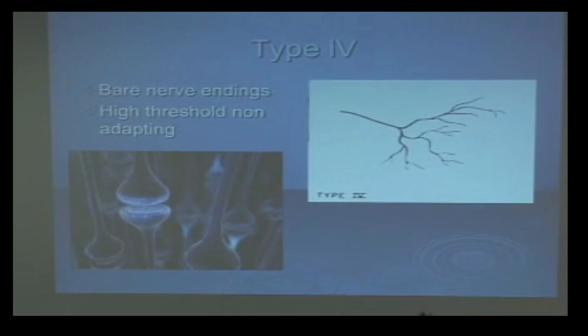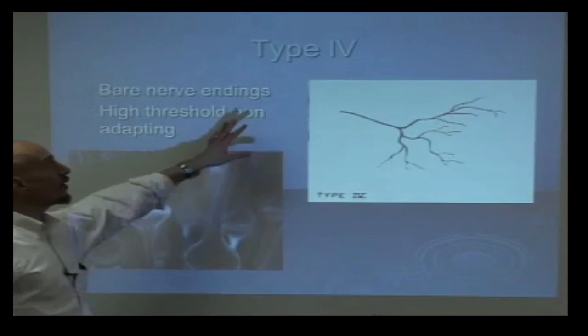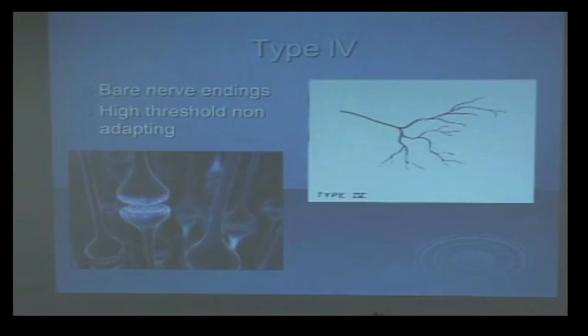Type 4 mechanoreceptors are the ones that we're trying to not activate. These are the bare naked nerve endings and they're high threshold non-adapting pain fibers. These are C fibers. This is what causes pain. The patient comes in with stagnation of qi in a joint, right, joint pain. What does he have? He has his type 4 mechanoreceptors firing very well. We know that portion of his nervous system is working really good.